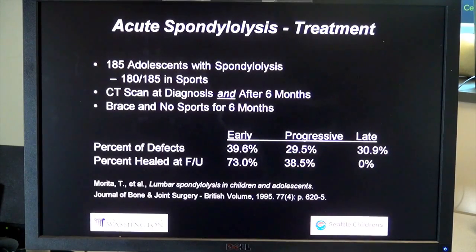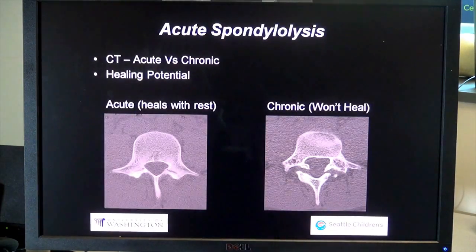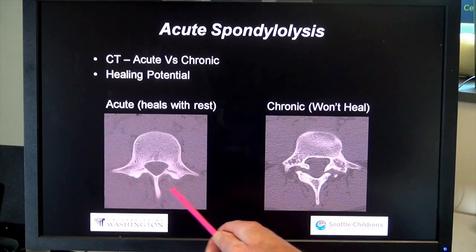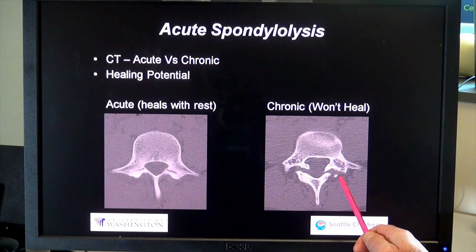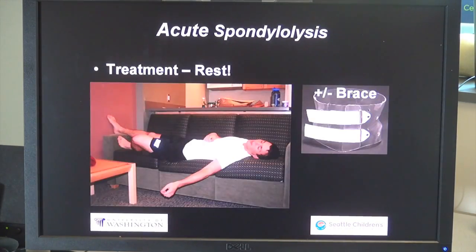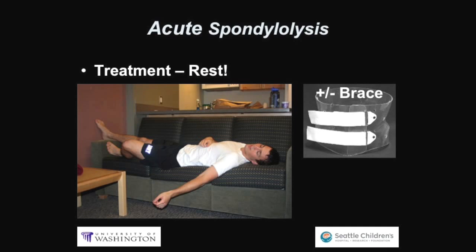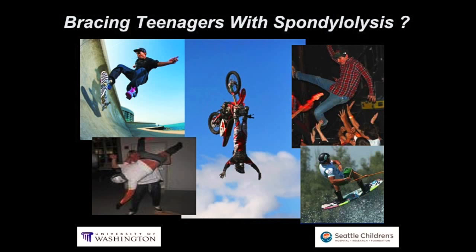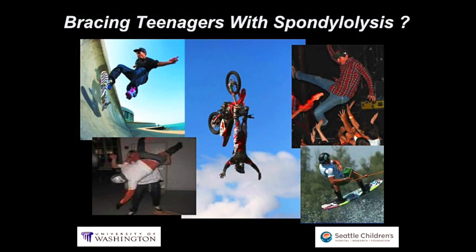For acute spondylolysis, you're probably better off stopping activity and resting, plus or minus using a brace. This is an example of an early spondylolysis on CT scan. This is a late one — there is no way with rest and a brace we can get that to heal; it may or may not be symptomatic. A brace is a little controversial — it's hard to show it makes a lot of difference — but I like to use it in adolescent athletic boys and girls because it's at least a reminder not to participate in high-impact activity.